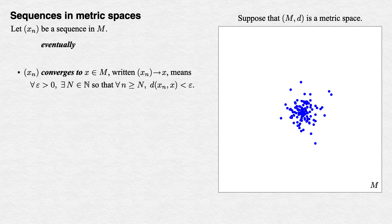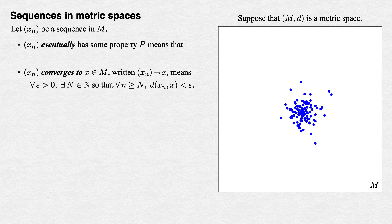Crothers introduces the term 'eventually' to express what we logically do with these tails of sequences. A sequence eventually has some property P means that there exists some index capital N so that this tail, x_n with n >= N, has property P.